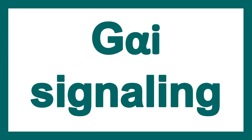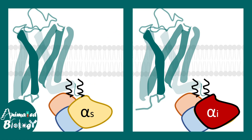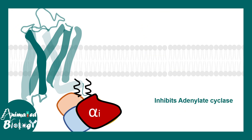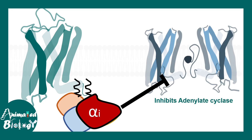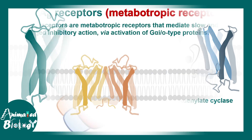Now let's talk about GαI signaling. Again the difference lies in the G alpha subunit. The GαI subunit, instead of activating adenylate cyclase, inactivates adenylate cyclase — that is its biological role.